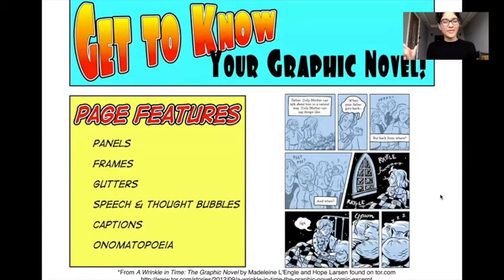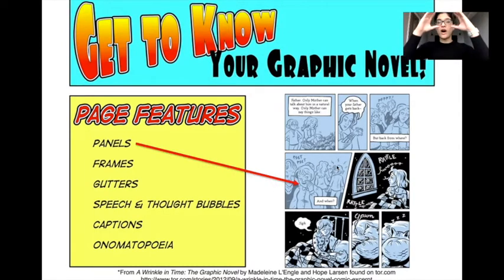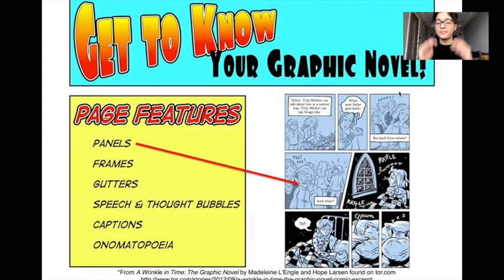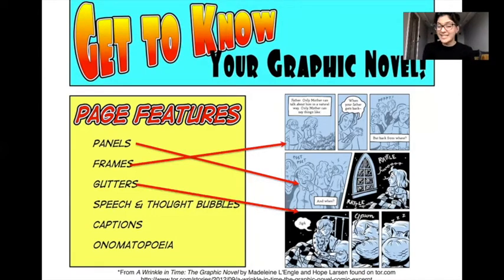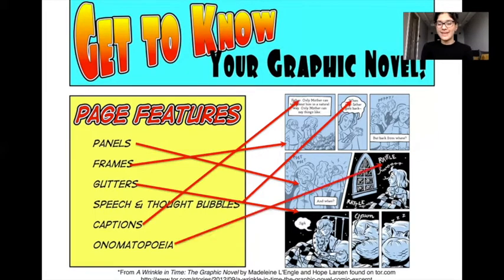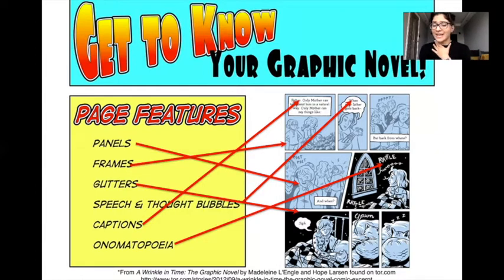Get to know your graphic novel! In graphic novels there are many features that we can see, such as panels. Panels are what the graphic novel is split into — every square or rectangle or section cut out to make one scene is called a panel. You've got frames as well, gutters, speech and thought bubbles, captions, and onomatopoeia. This graphic novel is from one called A Wrinkle in Time, by Madeleine L'Engle and Hope Larson.